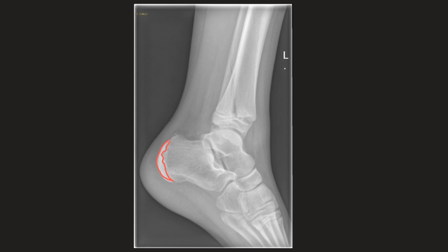When you look closely at the rest of the x-ray, we can see there is a fracture in the distal tibia, seen just here, going through the metaphysis and then going through the growth plate. So this is in keeping with a Salter-Harris type 2 fracture, which we said before was the most common type of Salter-Harris fracture.